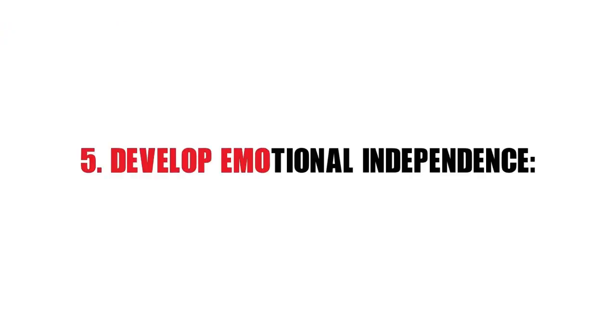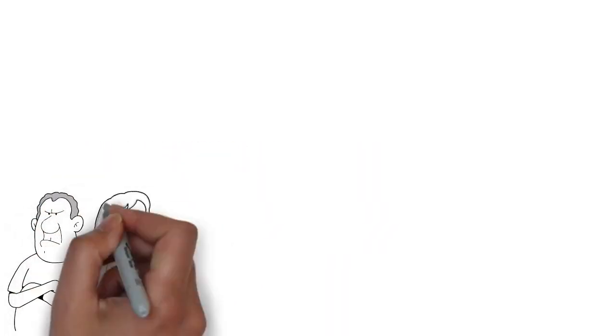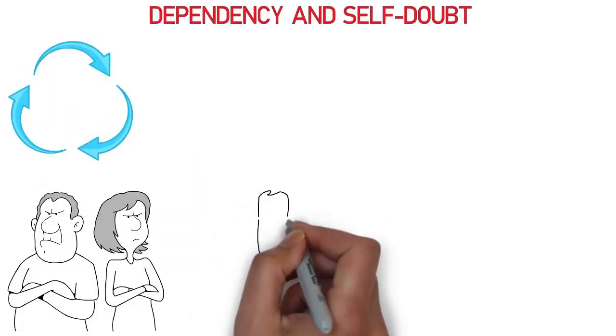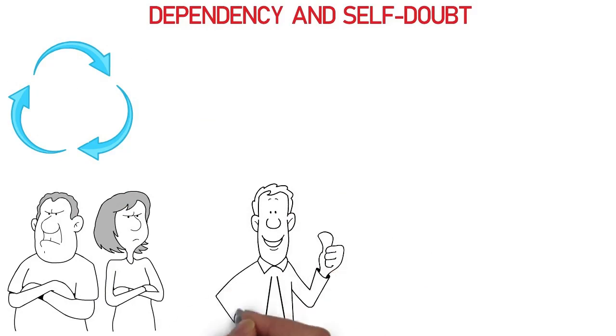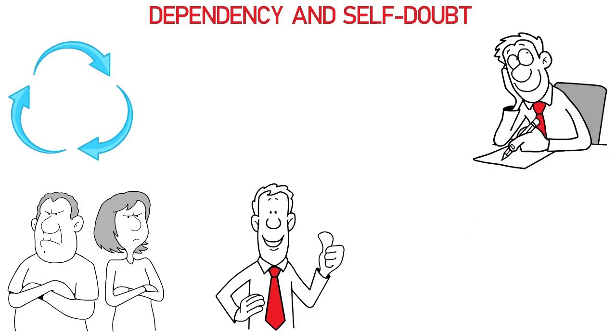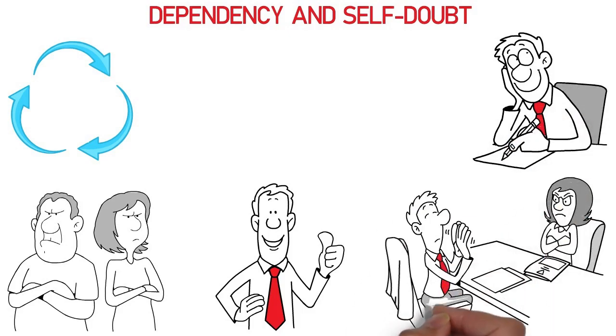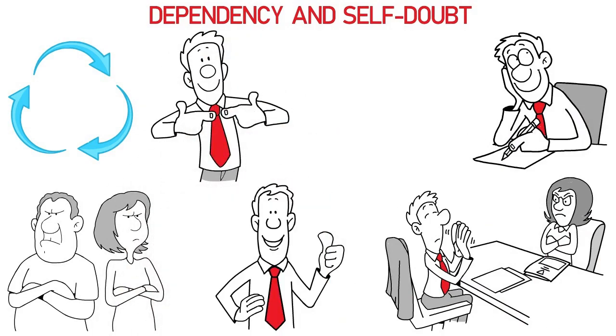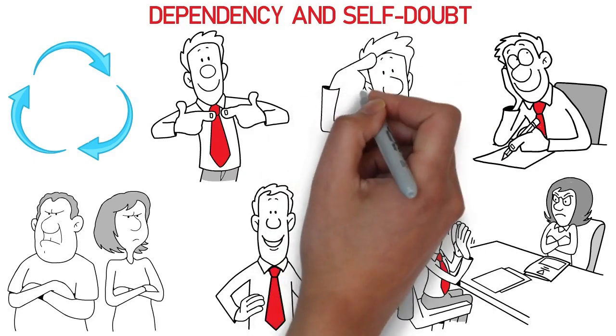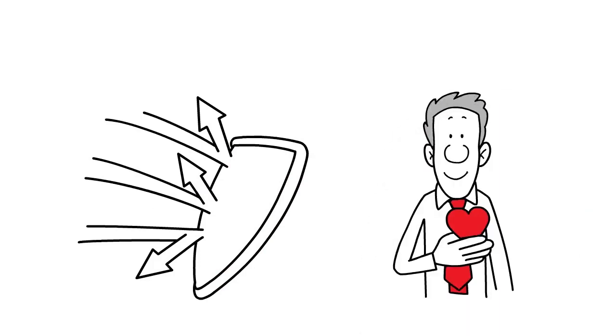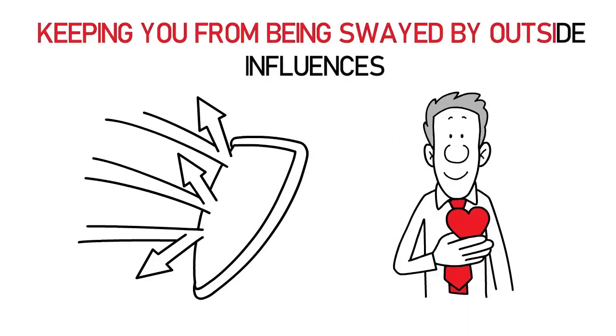5. Develop emotional independence. In a narcissistic relationship, it is common to seek validation from your spouse, which often leads to a cycle of dependency and self-doubt. It's time to break free and learn to validate your own feelings and experiences. Trust in your own perceptions and affirm your worth, irrespective of your spouse's acknowledgement or approval. It is imperative to cultivate robust inner strength, enhancing your emotional resilience to withstand manipulative behavior. This resilience acts as a shield, guarding your sense of self and keeping you from being swayed by outside influences.